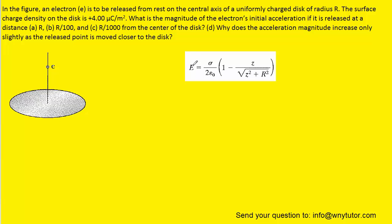Capital E represents the electric field produced by the charged disk. We have the surface charge density, which is given in the question, and epsilon, which is a constant. Z represents the distance above the center of the charged disk — in the picture, that distance Z is shown by a line — and R is the radius of the disk itself.